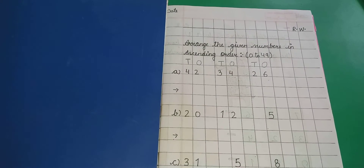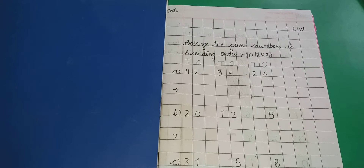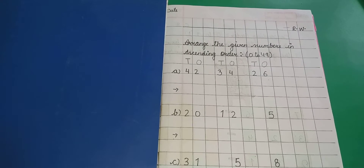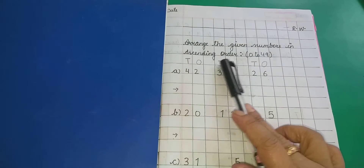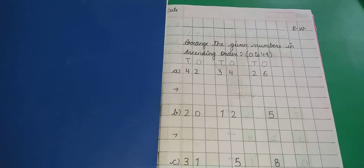So kids, in previous class, हमने 0 to 9 ascending order का concept सीखा था. Ascending order means छोटे number से हम बड़े number की तरफ जाते हैं. Numbers को हम इस तरीके से arrange करते हैं कि पहले smallest number आता है, then greatest number आता है. यानि जैसे आप stairs पर चढ़ते हैं, नीचे की सीढ़ी से ऊपर की सीढ़ी पर जाते हैं — ऐसे ही ascending order में smallest number to greatest number जाते हैं.